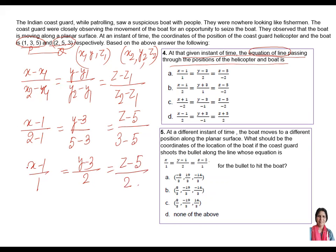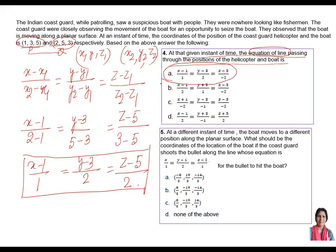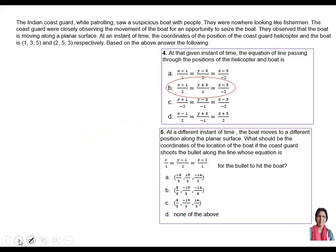So the answer is (x−1)/1 = (y−3)/2 = (z−5)/(−2), and option B is the answer to part four.